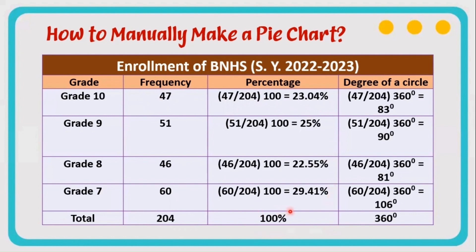Each total is equal to 100. In the fourth column, we need to know what is the size of each percentage. We need to compute the degree of each sector, so we also have to follow the formula. We have here the number of enrollment divided by total enrollment times 360.